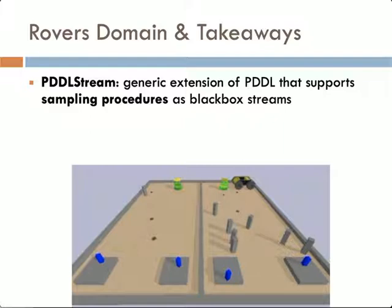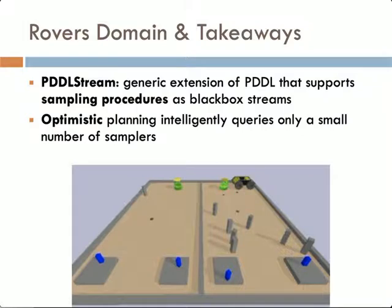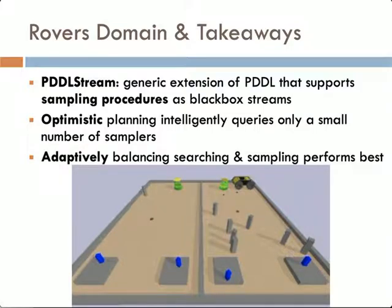The takeaways of this talk are as follows. Although we've presented many examples of mobile manipulation, PDDLStream can be applied to other domains, such as an extension of the classic rovers domain incorporating visibility and collision constraints. First, we introduce PDDLStream, an extension of PDDL that introduces the notion of streams to model sampling procedures. Second, we present algorithms that optimistically plan using placeholder values in order to intelligently call only a small number of streams. Finally, an adaptive algorithm that balances searching and sampling in order to achieve the best overall performance. Thank you.